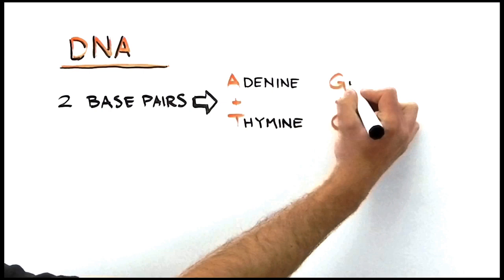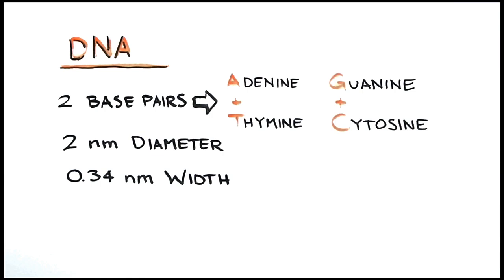There are only two standard base pairs. DNA has roughly a 2 nanometer diameter, and each base is about a third of a nanometer wide. And the double helix has a pretty simple and regular helical geometry.